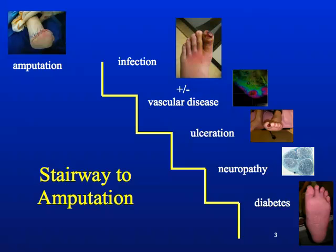The final step, which leads to amputation, is often the most emergent, and that's infection. Once you have an ulceration and a break in this protective dermal envelope, it allows bacteria to flourish on the inside, causing a diabetic foot infection, which leads to a diabetic foot amputation.